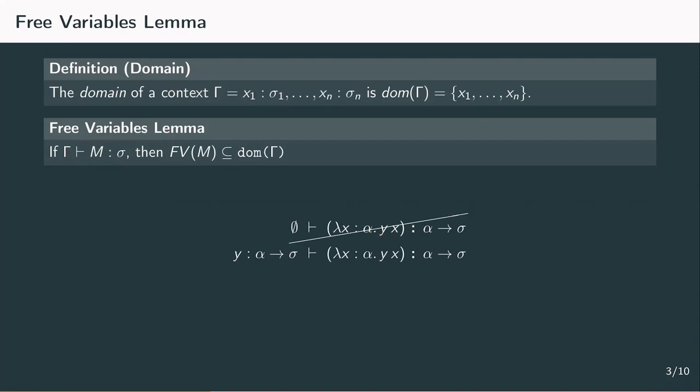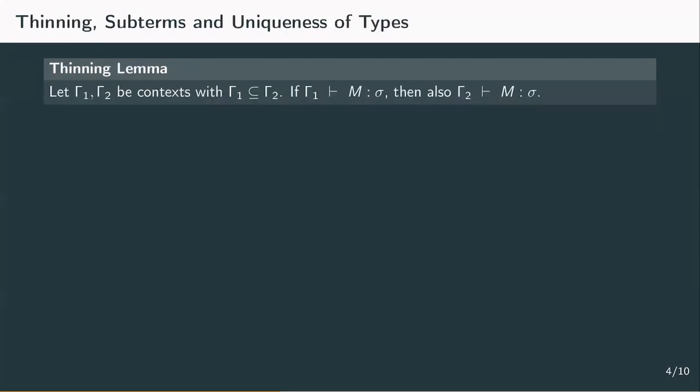We're now going to state three short lemmata without proof, only giving an intuition. The thinning lemma states that if we make the context bigger, we don't lose any expressiveness.